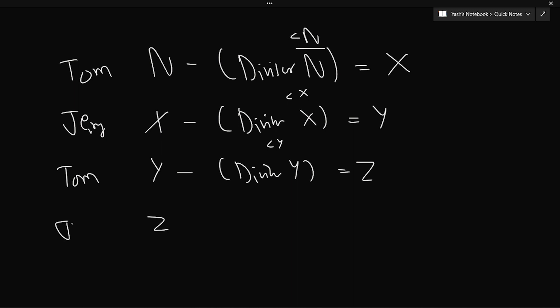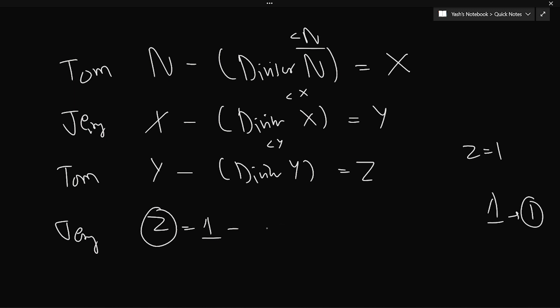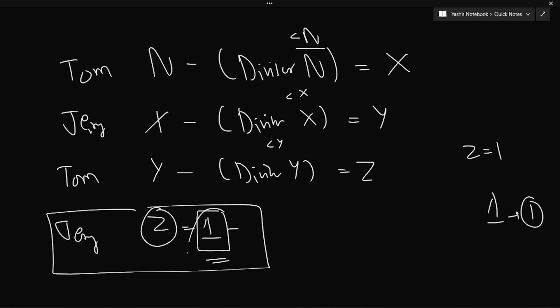Suppose z equals 1. From 1, no move can be made because the only divisor of 1 is 1 itself, and the constraint says we cannot subtract a number by itself — the divisor must be strictly lesser than n. So if a player faces the value 1, they cannot make any move and will lose.